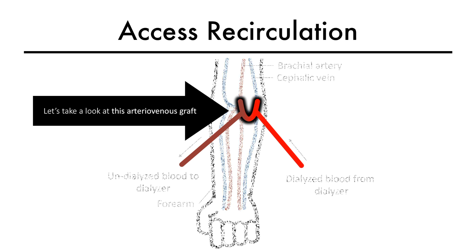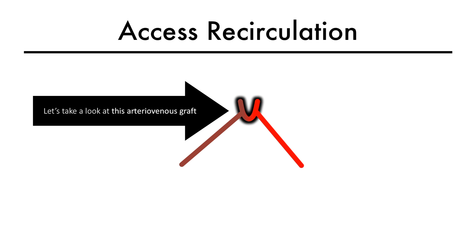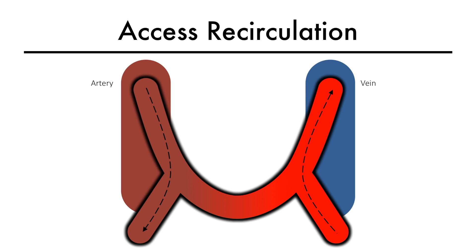Let's take a look inside the AV graft to see why this happens. With a well-functioning dialysis access, unclean blood leaves via the arterial needle to enter the dialyzer. Clean or dialyzed blood from the dialyzer enters back into the body through the venous needle.